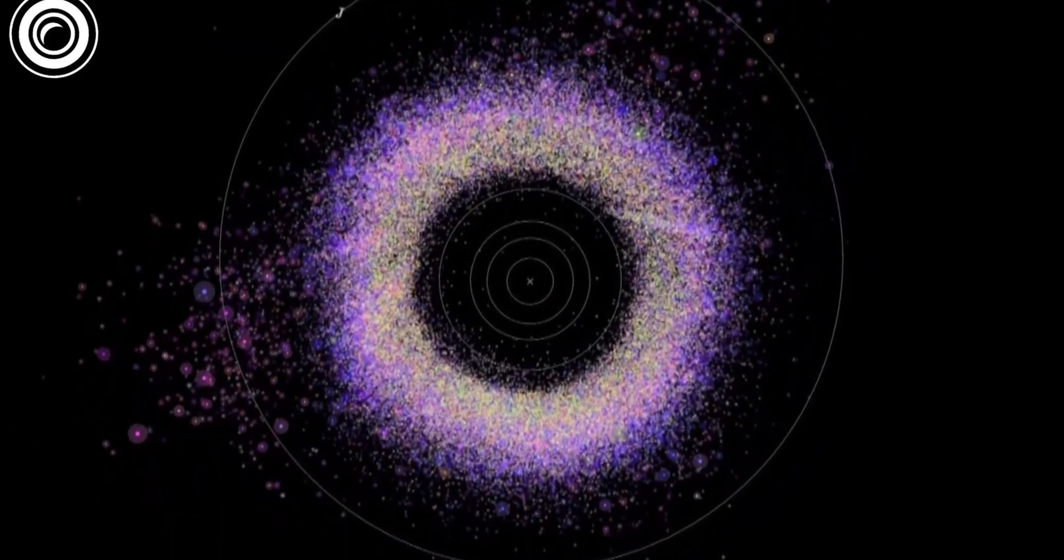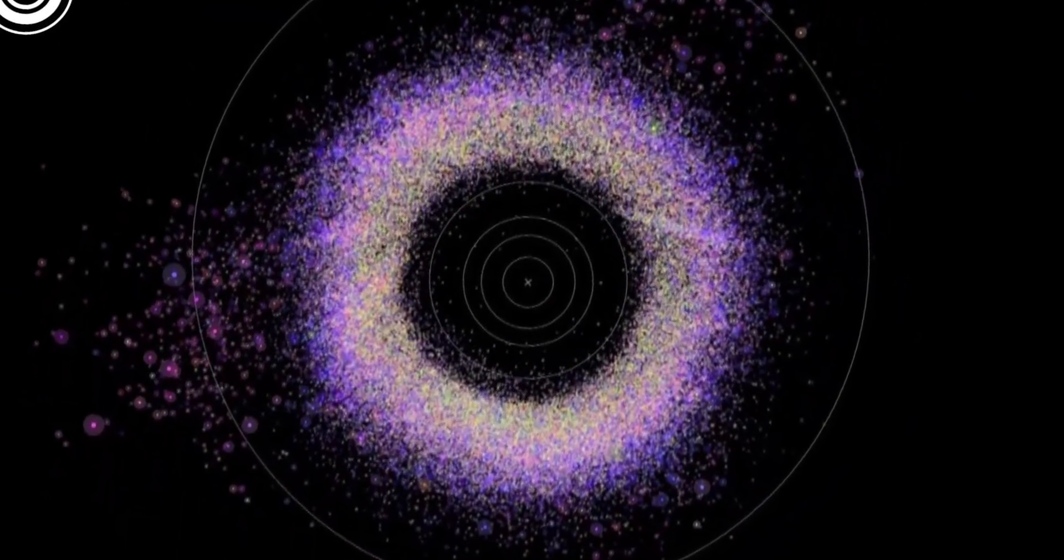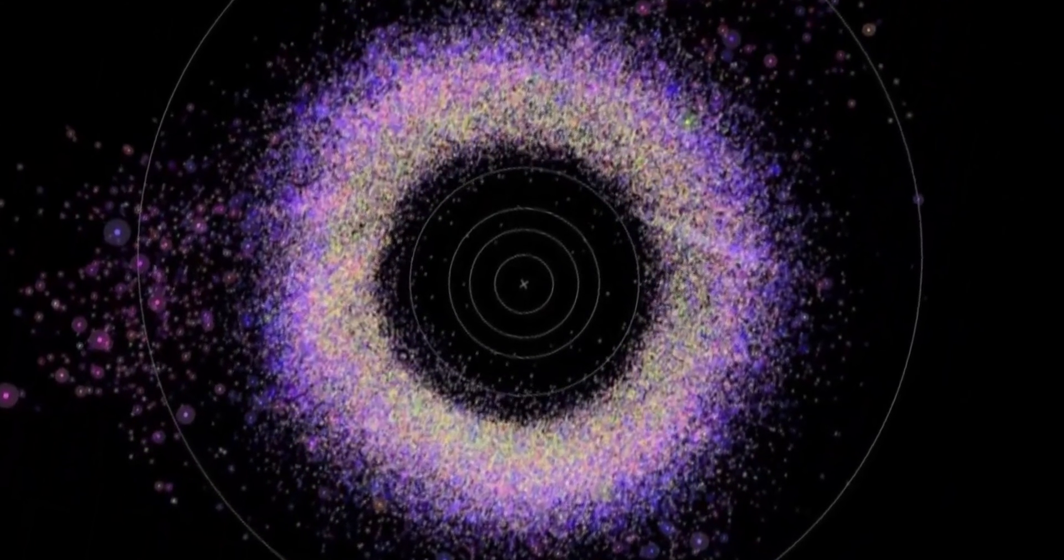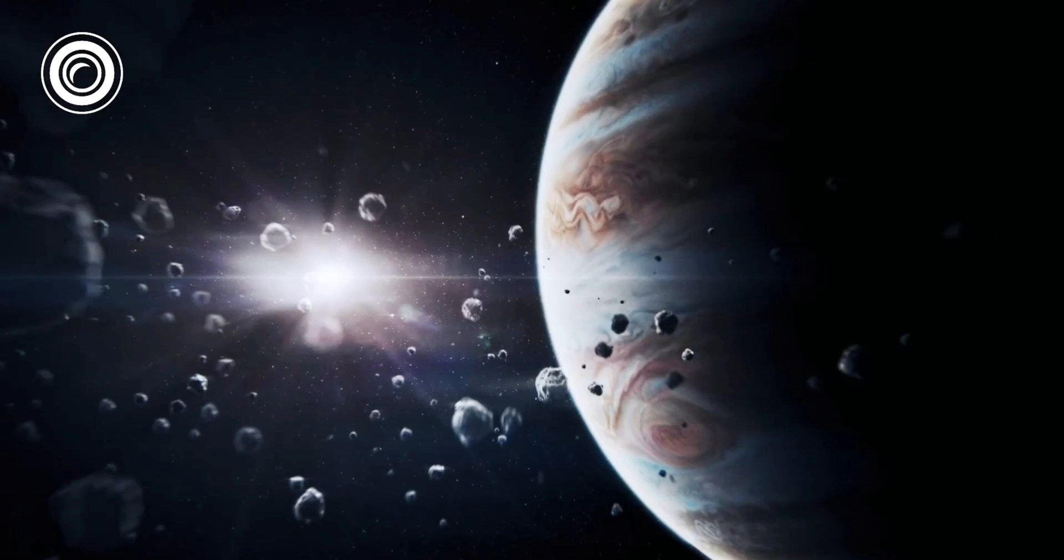The scientists are also looking to zoom in on smaller objects within our solar system to generate a more complete picture of our closest neighbors, how our system was formed and even identify incoming threats from asteroids.